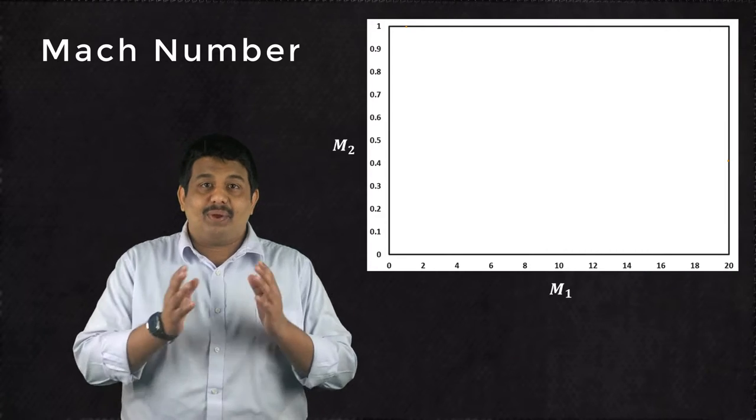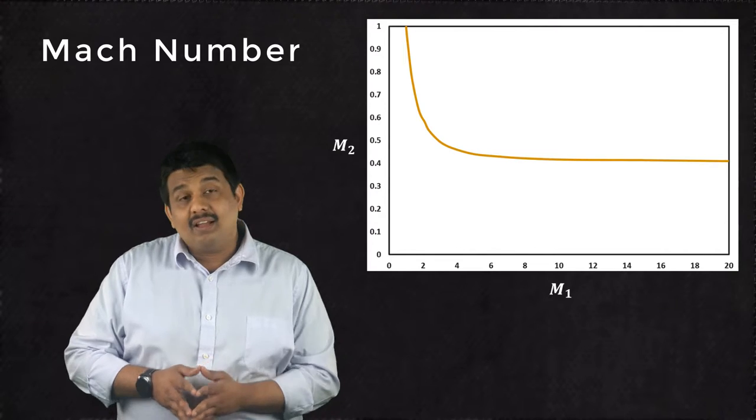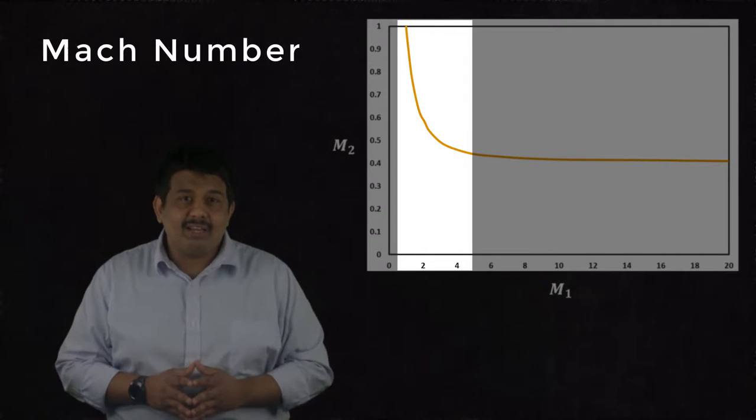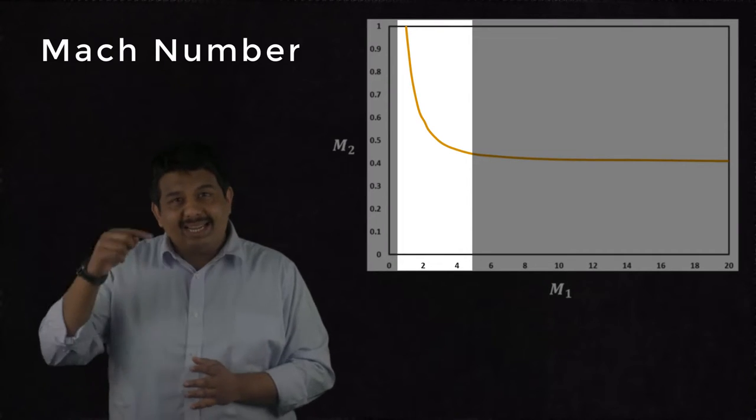This relationship between M1 and M2 is plotted for air as shown here. For small values of M1, the value of the downstream Mach number M2 decreases sharply.